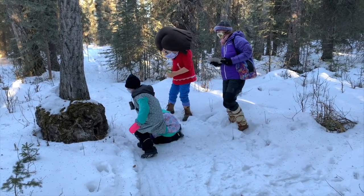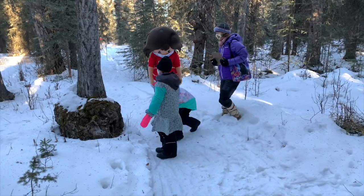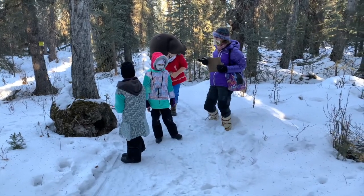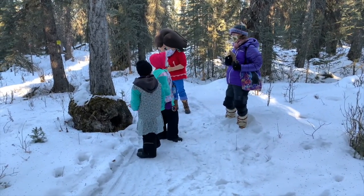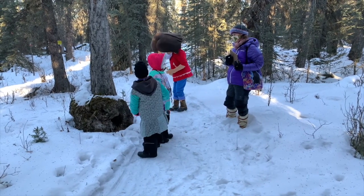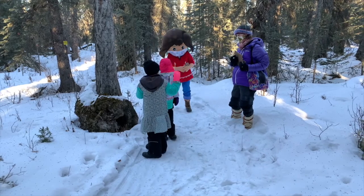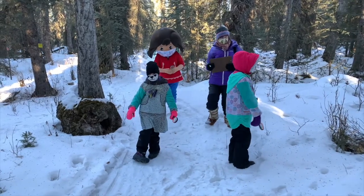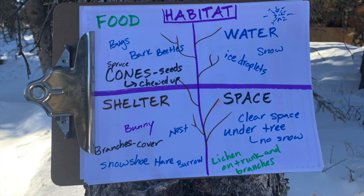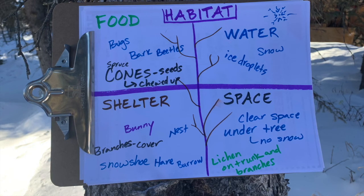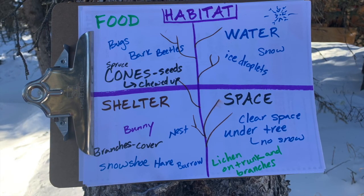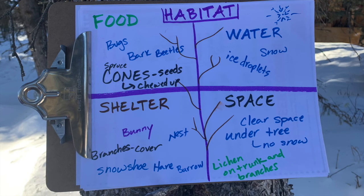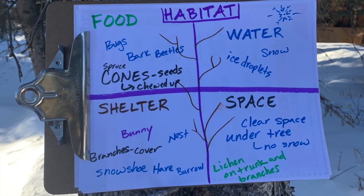Allow the students to explore the tree and encourage them to look on the trunk, on the branches, on the roots, and on the needles or leaves. What plants, animals, and animal signs do you find on different parts of the tree? Once you go back inside, allow students time to record the data into their own notebooks — they can draw pictures or make lists about what they observed.